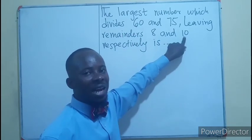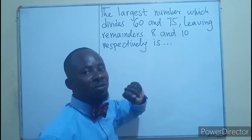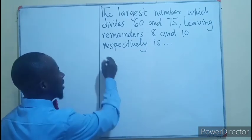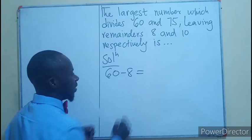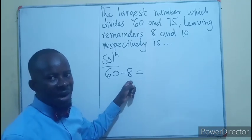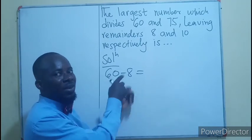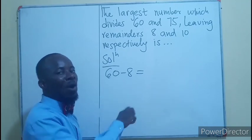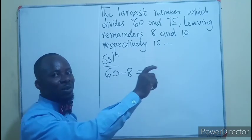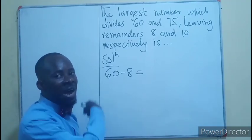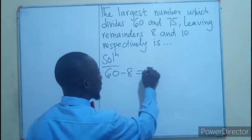Right away, let us take 60 minus 8. Since this is the remainder, the number that is dividing 60 leaving the remainder of 8 is not a factor of 60. So we need to take away the 8 so that that number can easily divide it. That will give us 52.